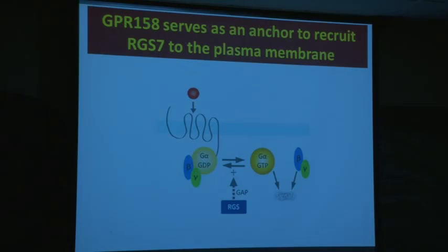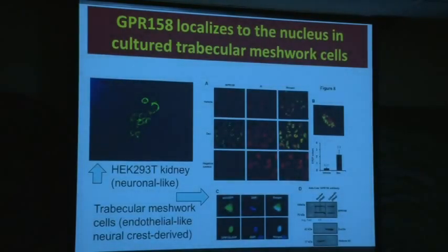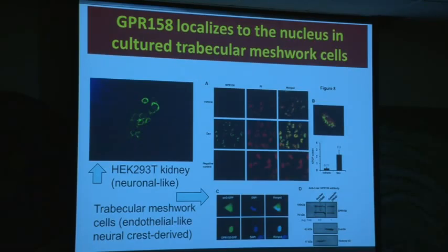It turns out that GPR-179 is responsible for the no B-wave mouse. It acts like a typical G protein coupled receptor and is found in the plasma membrane. We were able to reproduce that data and show that we got the same intracellular localization in the cells used in the two published papers that came out just before ours. However, in our hands, in trabecular meshwork cells, the gene did not go to the plasma membrane — it went to the nucleus.